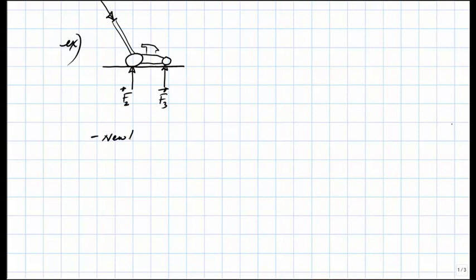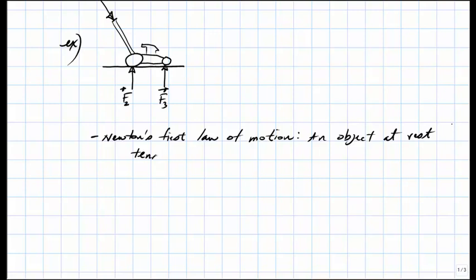Let's introduce Newton's first law of motion. Newton observed that an object at rest — for example, the lawn mower we just considered was at rest in our backyard — will just remain at rest indefinitely if there's no push or pull applied to it. In other words, the lawn mower won't just magically start to move.